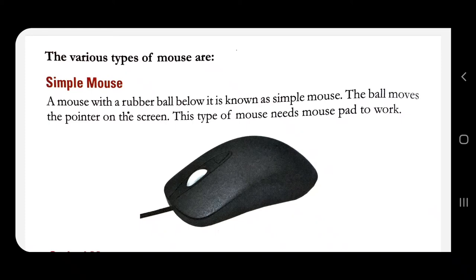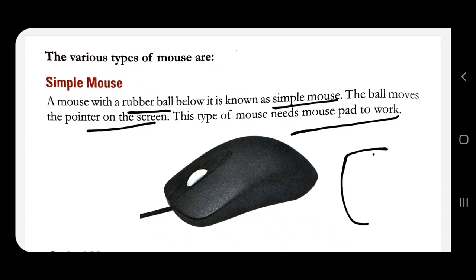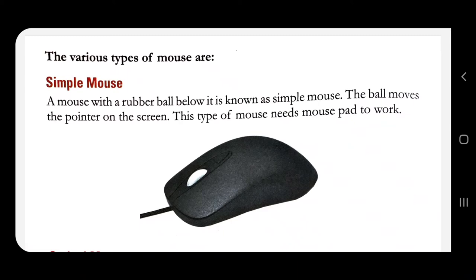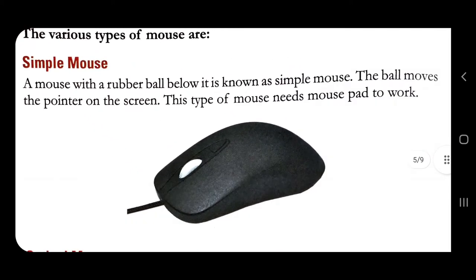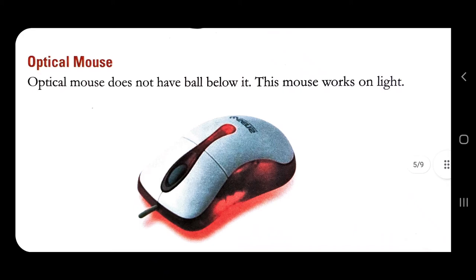Simple mouse: a mouse with a rubber ball below it is known as a simple mouse. The ball moves the pointer on the screen. This type of mouse needs a mouse pad to work. The mouse pad is placed and the mouse is used on it — only then it works. See the picture; this is how a simple mouse looks like. You need a mouse pad to work with a simple mouse.